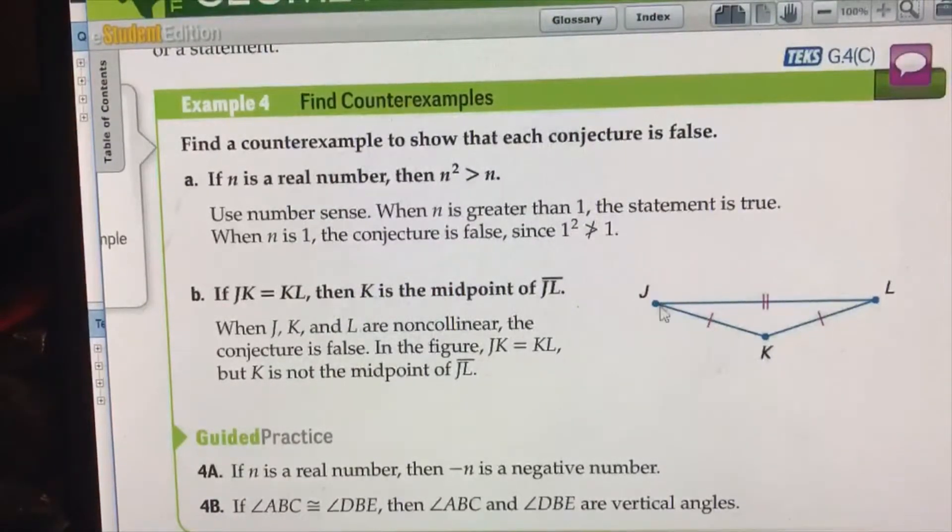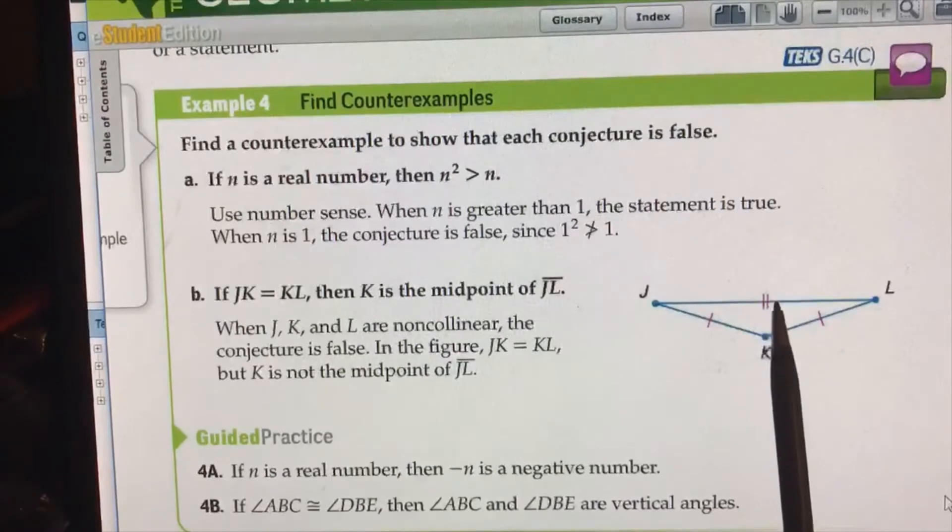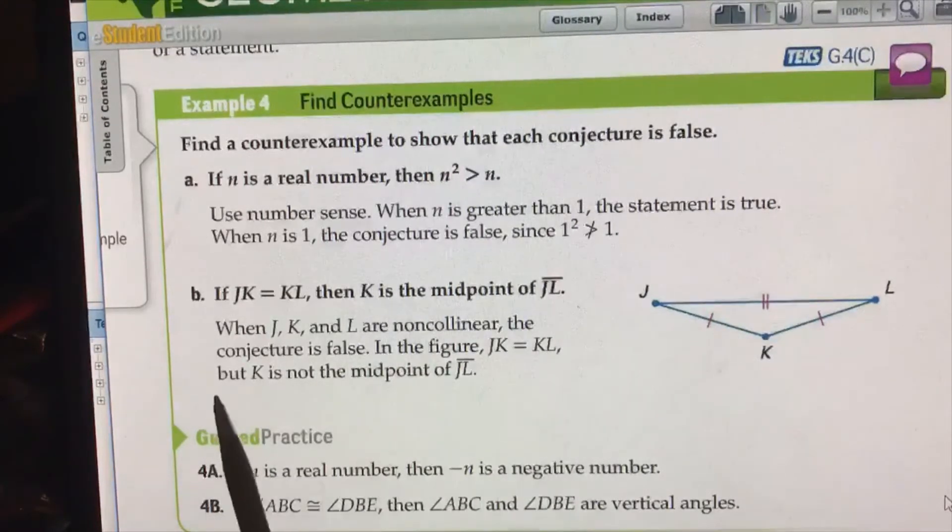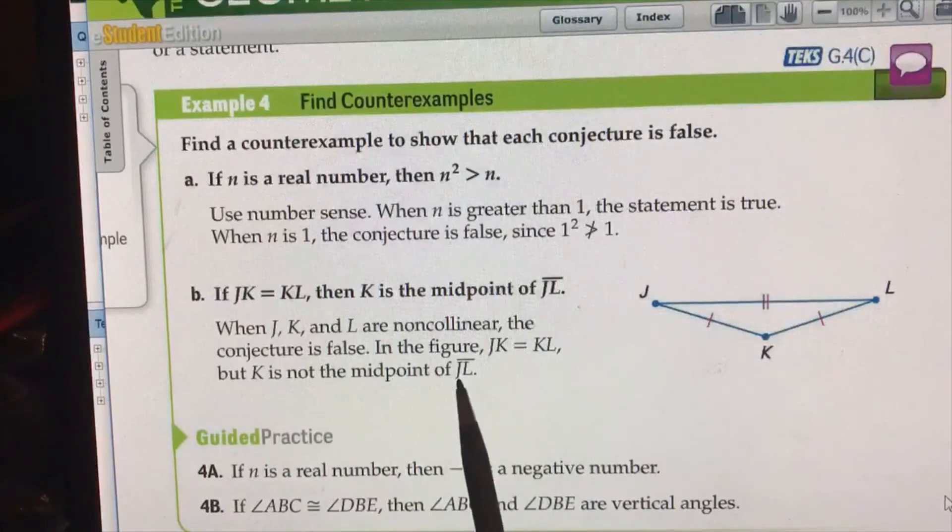When J, K, and L are non-collinear, here they are non-collinear. Otherwise K would have to be on that line. The conjecture is false because K is not on that line. In the figure, JK equals KL but K is not the midpoint of JL.